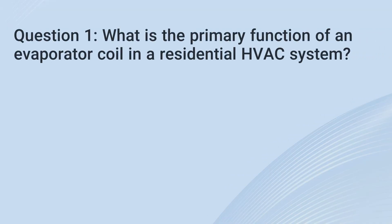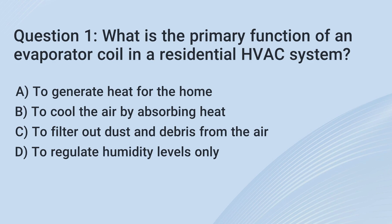Question 1: What is the primary function of an evaporator coil in a residential HVAC system? a. To generate heat for the home. b. To cool the air by absorbing heat. c. To filter out dust and debris from the air. d. To regulate humidity levels only.